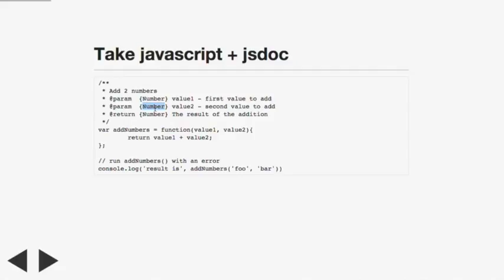Question: can you selectively disable tests around particular functions or parameters? Yes - you see param, return - all those tags are JSDoc tags. If you add @no-better-js, this function will be ignored.